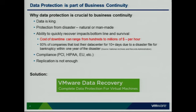Compliance is another reason for data protection. I've talked to customers who say they're replicating to a second site so they have a backup copy. But if you have corrupt data in your primary data center and you replicate that corrupt data to the secondary, what do you have? Corrupt data in both places. You have to have both — replication and backup — for true business continuity.